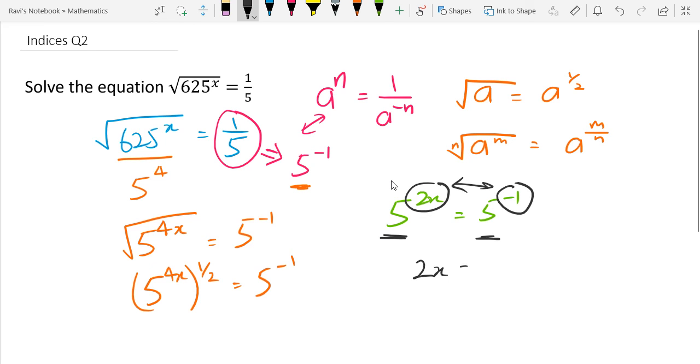So 2x equals minus 1. So x is equals to minus half. Okay, so that is your final answer. Thank you.